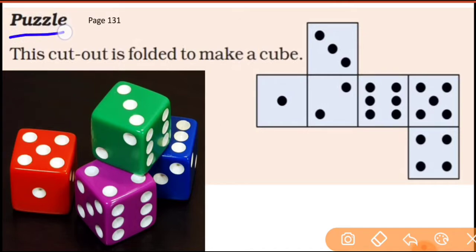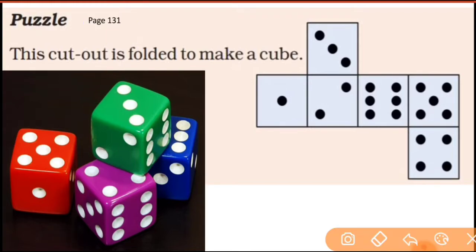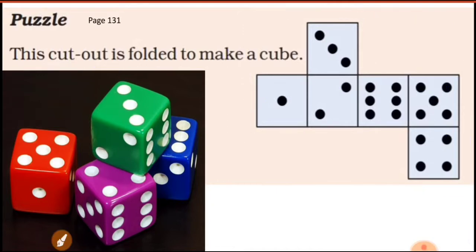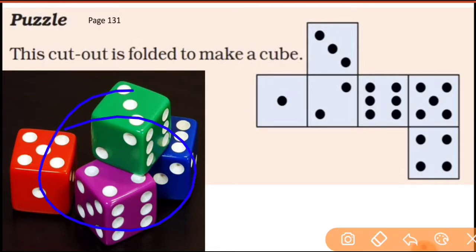At page number 131 you have a puzzle — yeh kuch dice jaisa lag raha hai. This cut-out is folded to make a cube. You can see one, two, three, four, five, six faces — all the faces are square.